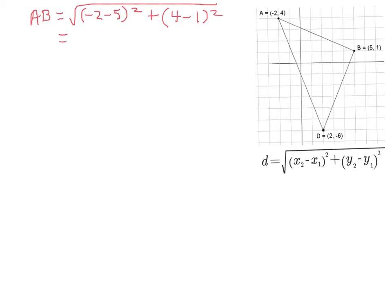Now it's time to simplify what I have, so it's going to be the square root of negative 2 minus 5 is negative 7 squared, plus 4 minus 1 is 3 squared. So it ends up equaling the square root of 49 plus 9, which is equal to the square root of 58. Now I know that we can use our calculator to approximate the square root of 58, but there's no need to. In fact, it's best to leave the square root in your answer whenever the number underneath the square root sign is not a perfect square.